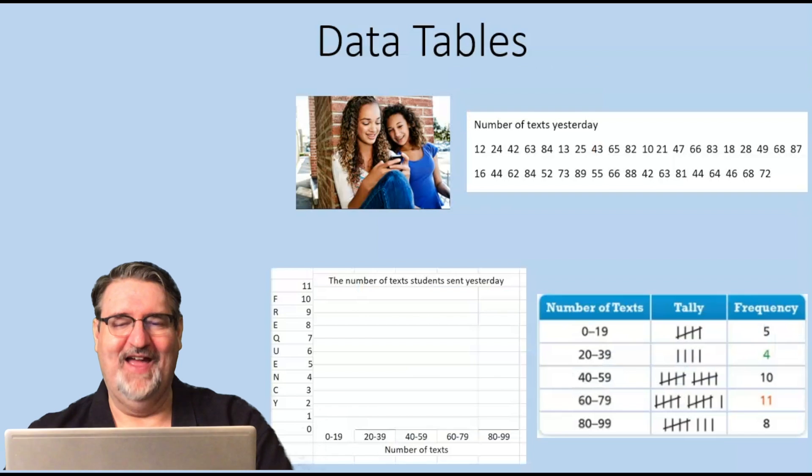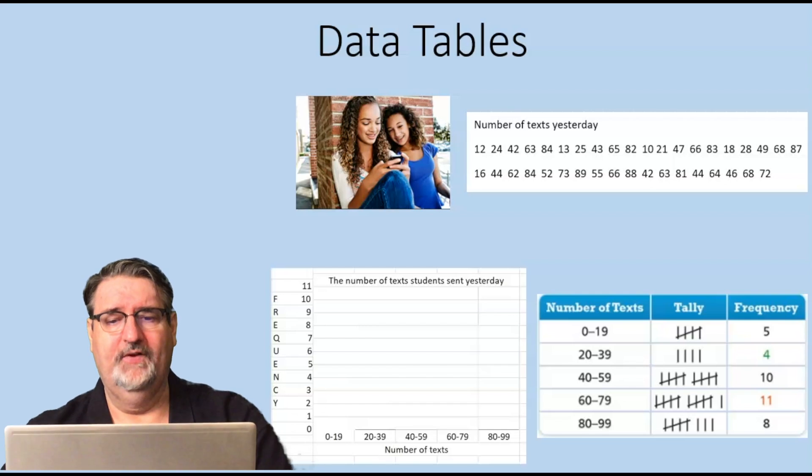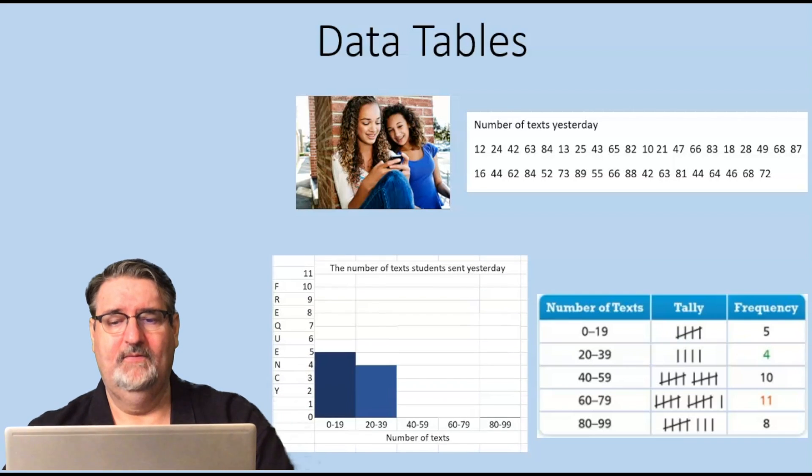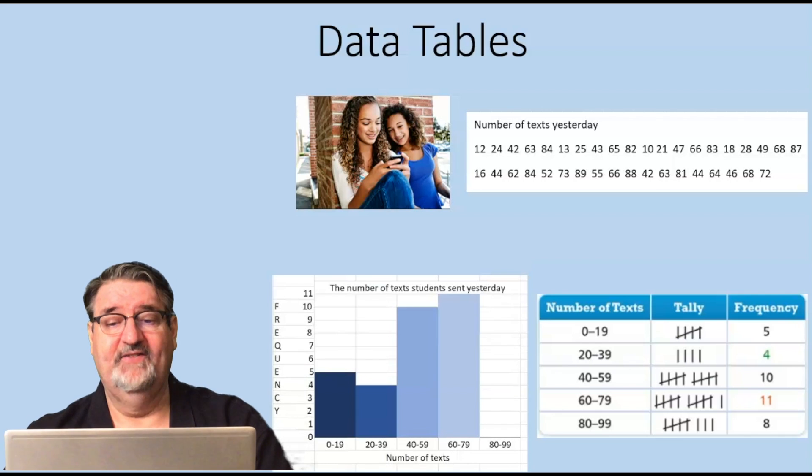All right, next we can graph that. So where it says number of texts we put that across the bottom, and we label that number of texts. On the left side for the frequency we have it from zero to 11, and the title of it is the number of texts students sent yesterday. So we graph this: on the first column we have five.